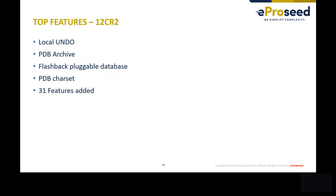The biggest feature in 12c release 2 in my opinion is the ability to clone a source PDB without putting it in read-only mode — for that you need to enable local undo. Another good feature is PDB archive, better for managing unplug and plug operations. It's also possible to flashback pluggable databases in 12c release 2. Another huge enhancement was PDB charset: in release one it's not possible to have different charsets per PDB. In total, 31 features were added from 12c release one to release two.